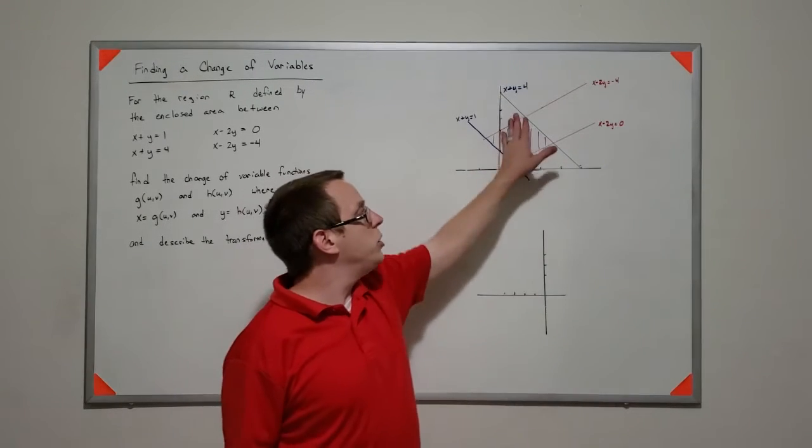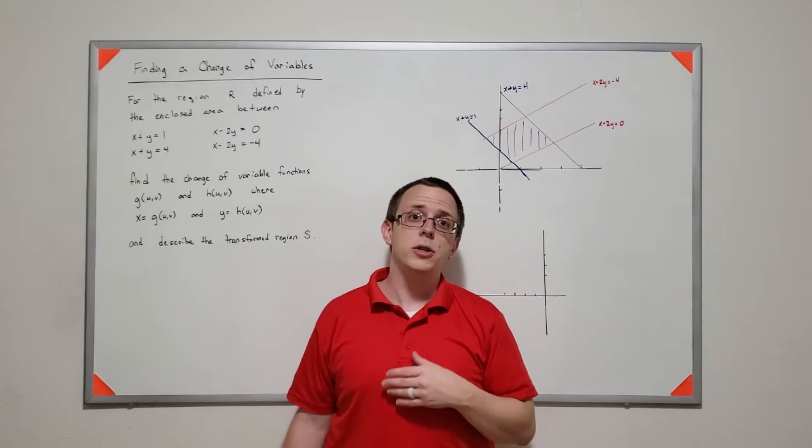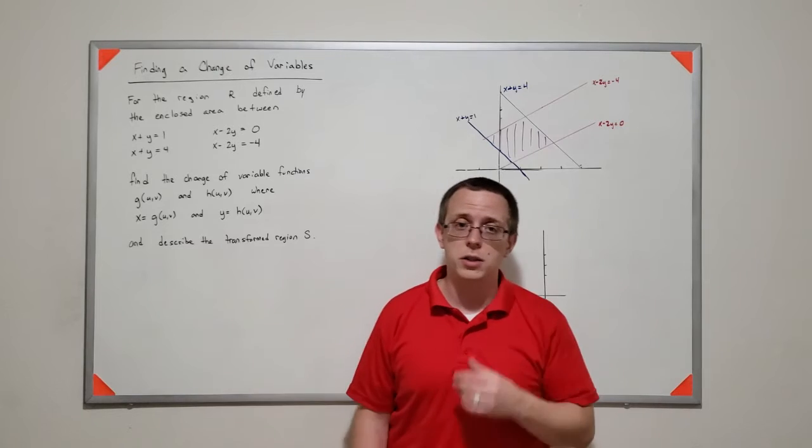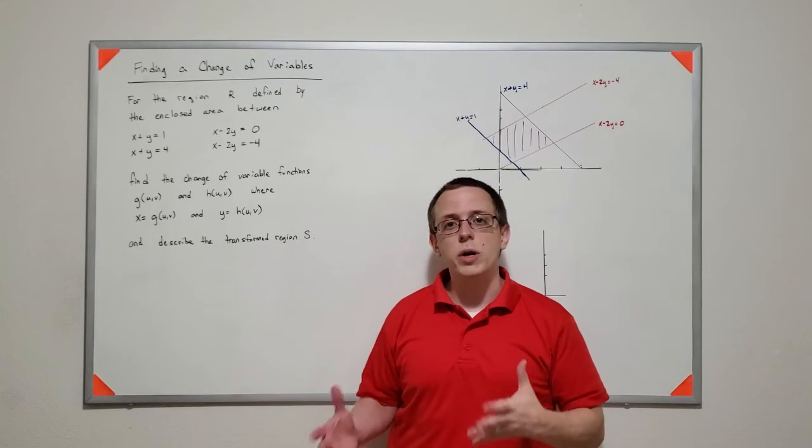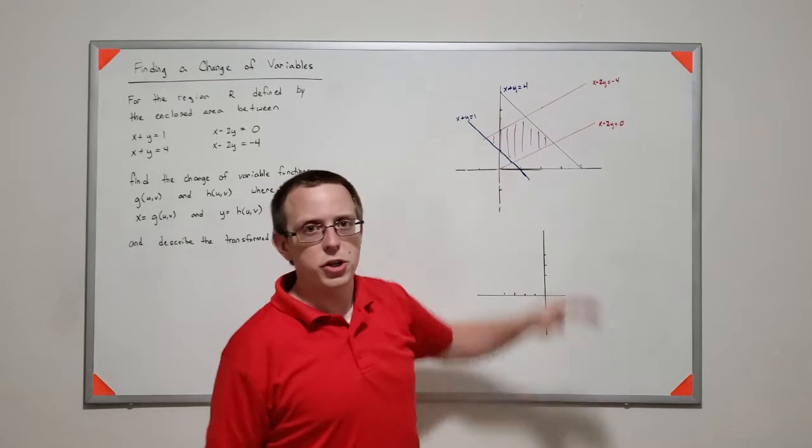And we have a region here and what we're trying to do is we're trying to figure out a way to transform that region so that we have very convenient limits of integration. The reason why we might want to do this is that if we were trying to integrate on this region, we'd have a couple of issues.